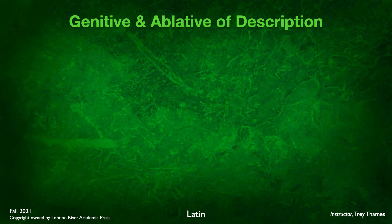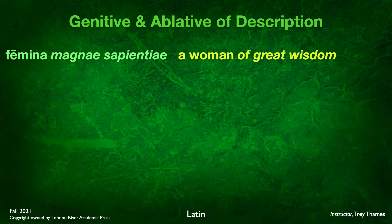Let's look at some examples. Femina magnae sapientiae — a woman of great wisdom. Sapientiae is in the genitive, 'of wisdom,' and magna is the genitive adjective meaning 'great.' Both together describe femina — a woman of great wisdom. Another example: pax in hominibus bonae voluntatis — peace among men of goodwill. Bonae voluntatis are both genitive singular, describing hominibus — men of goodwill.